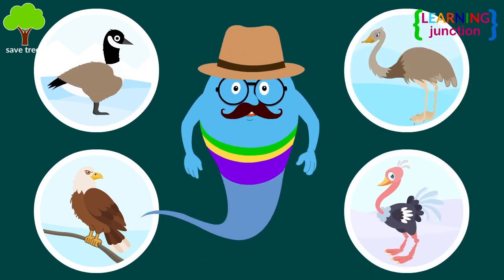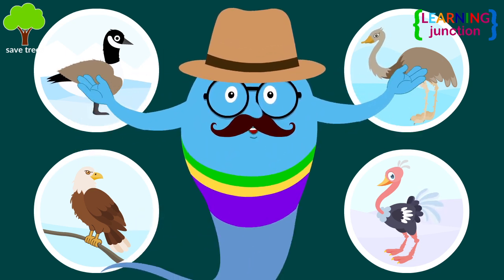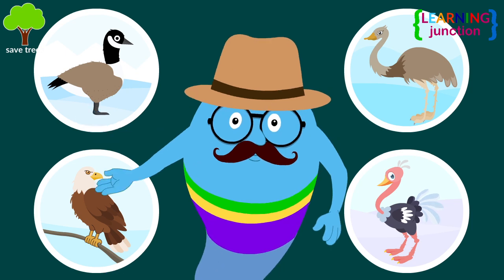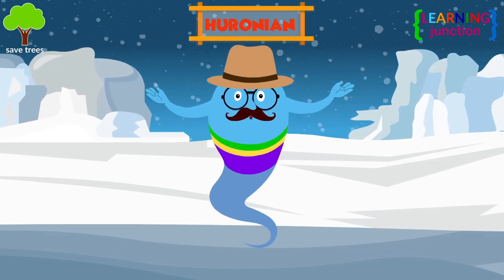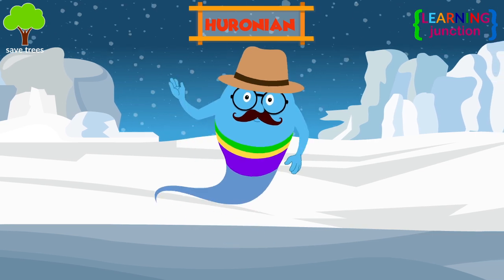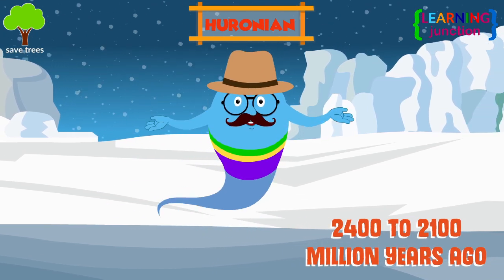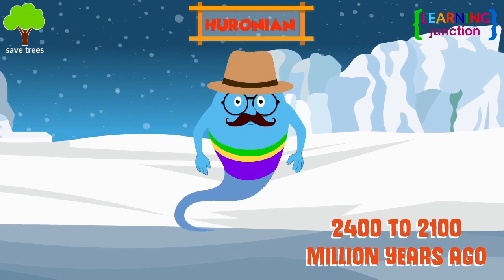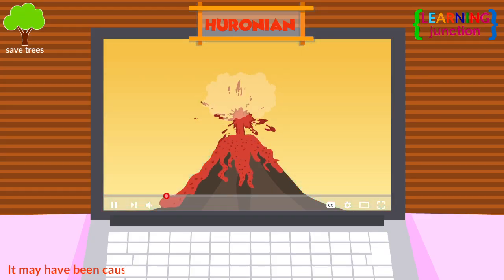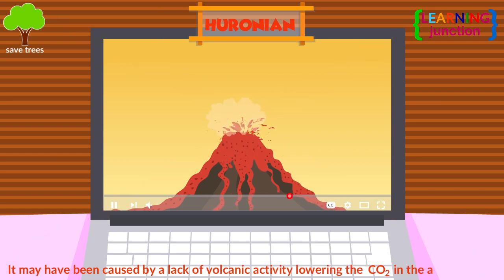The Earth has experienced five major ice ages. Let's study about these one by one. The first is the Huronian — one of the longest ice ages in the Earth's history. It lasted from 2,400 to 2,100 million years ago. Scientists think it may have been caused by a lack of volcanic activity, which lowered the carbon dioxide in the Earth's atmosphere.